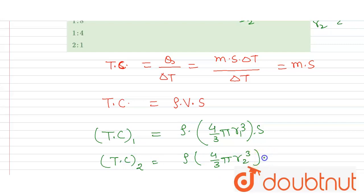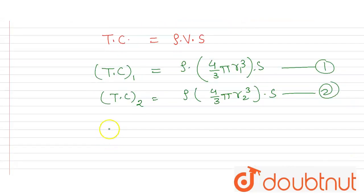Then this is equation 1 and this is equation 2. Now divide both the equations. The thermal capacity TC₁ divided by the thermal capacity TC₂